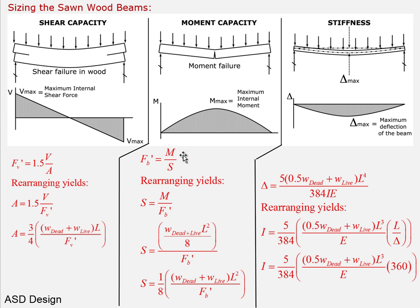For bending, the allowable stress Fb' equals M/S. Since the wood industry provides Fb' for a given species and grade, our job is to find the required section modulus: S = M / Fb'. For a simple span beam, M = (W_dead + W_live) × L² / 8.